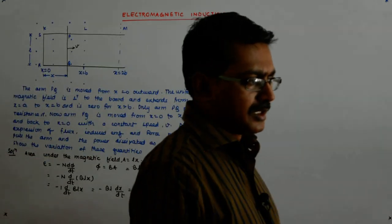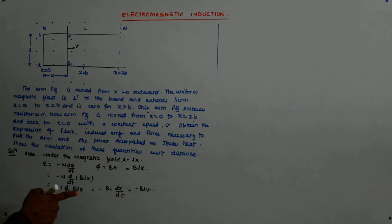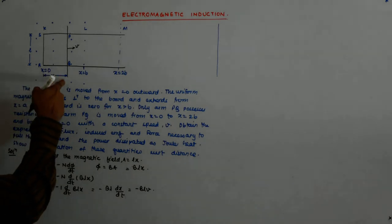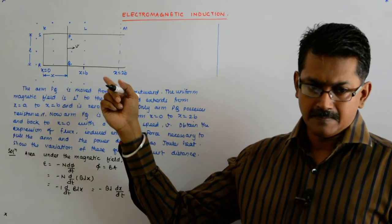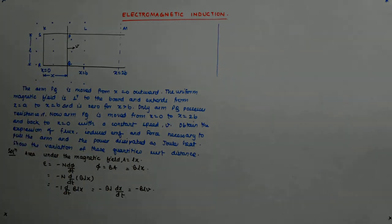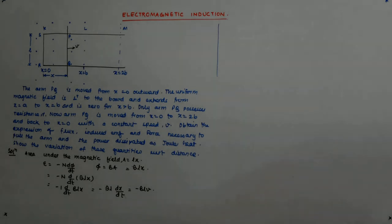Since V is a constant, E is a constant. Now, dx/dt — the way we have taken it, dx is a positive quantity and V is positive, so dx/dt = V. This gives a fair idea of what is happening.